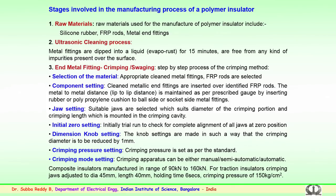The raw materials used for the silicon rubber insulator are silicon rubber, the fiberglass rod, and the metal end fittings. The metal end fittings are cleaned using an ultrasonic cleaning process, where they are dipped into a liquid for a known time to remove any impurities present on the surface. Cleaning of impurities is very important. These end fittings then undergo crimping and swagging. The appropriate cleaned metal fittings and fiberglass rods are selected accordingly.